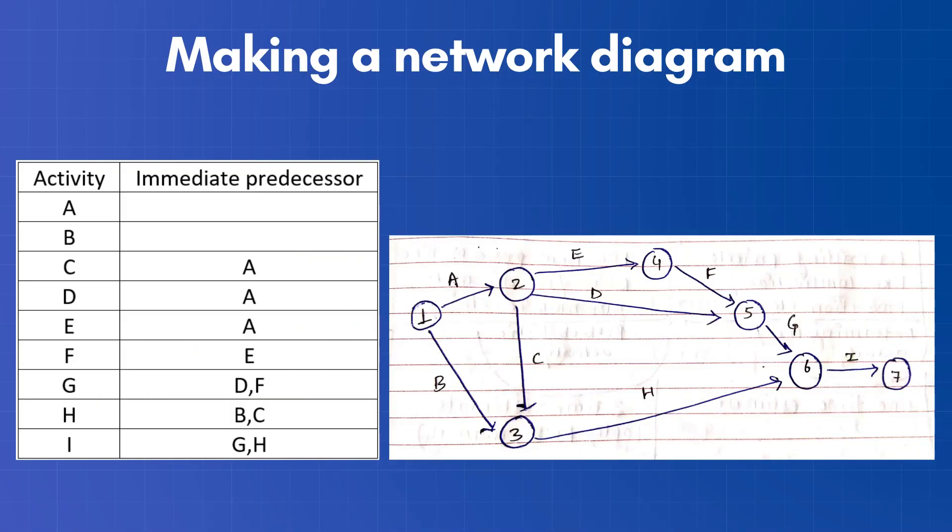Now let's start making a network diagram. Here in this particular table, activity A is the immediate predecessor for activity C, D and E. So we will start making the network with activity A.